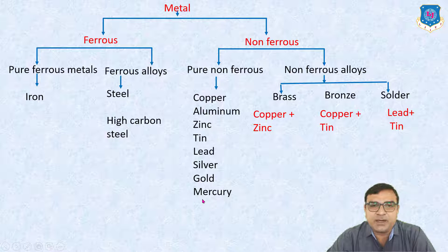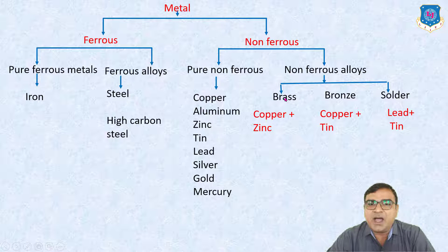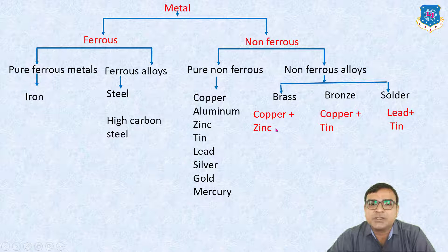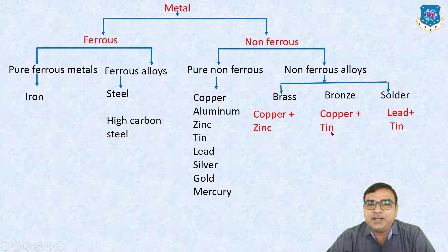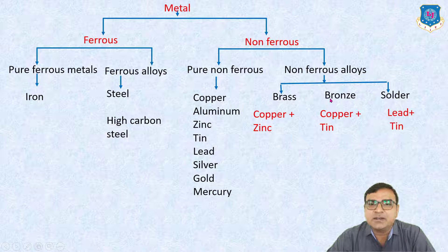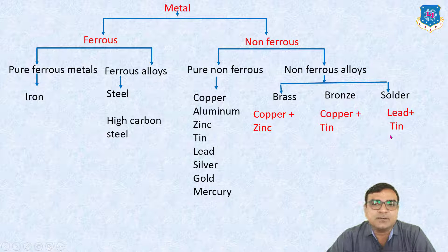Mercury is a liquid metal. Non-ferrous alloys: for example, brass is a non-ferrous alloy which is a combination of copper plus zinc, in which copper is the major component and some part of zinc is added. Similarly, if you add tin into copper, the alloy is known as bronze. Solder is made of lead plus tin.